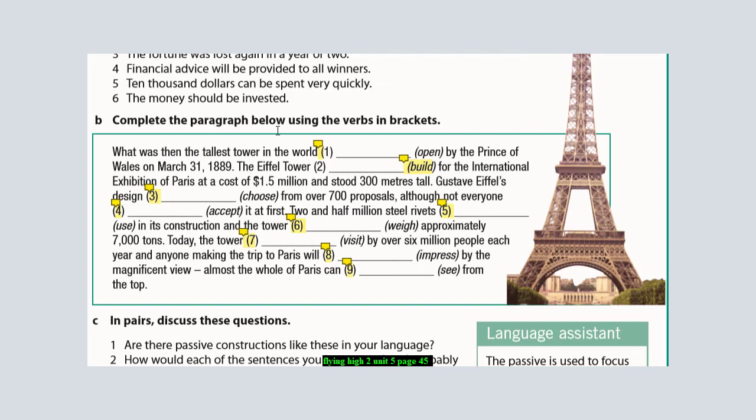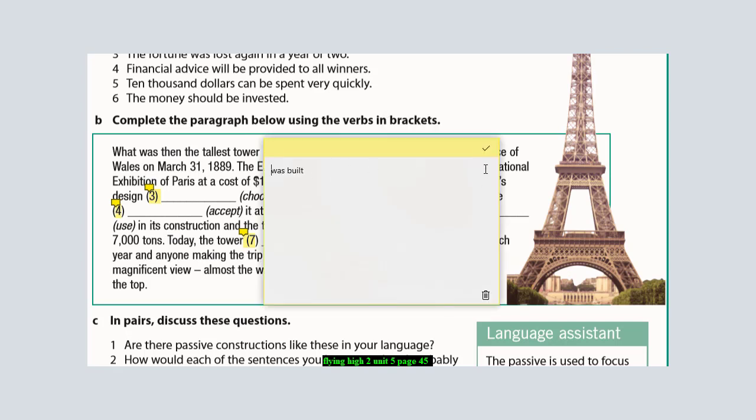Look here at exercise B: complete the paragraph below using the verbs in brackets. I'm going to show you how to develop practice in brackets based on the tense, whether it is past, present, or future. What was then the tallest tower in the world was opened by the Prince of Wales. Since we have a sentence in the past, we use 'was', and the verb 'open' becomes past participle 'opened'. The answer here is 'was opened'. The Eiffel Tower was built - since it's in the past, the answer will be 'was built'.